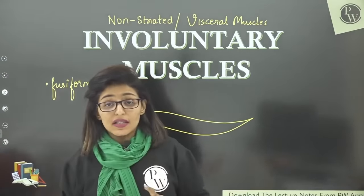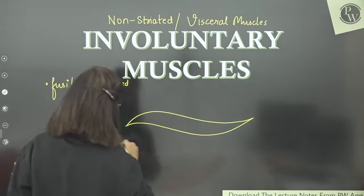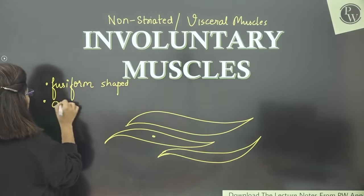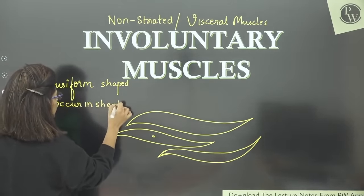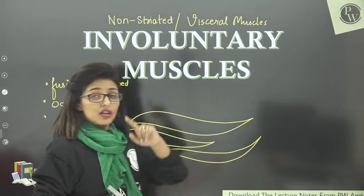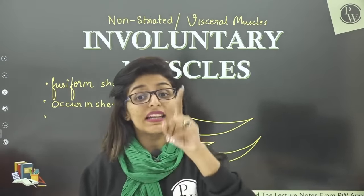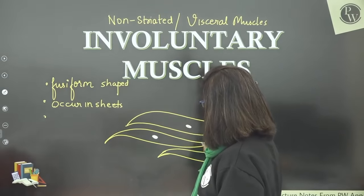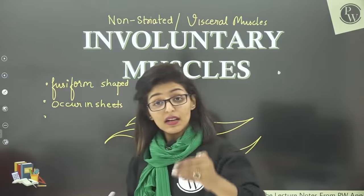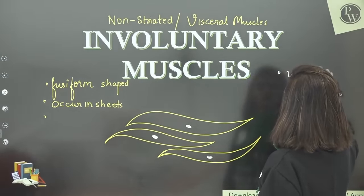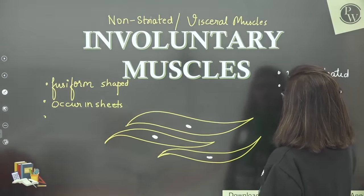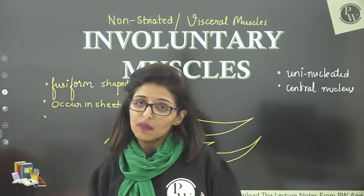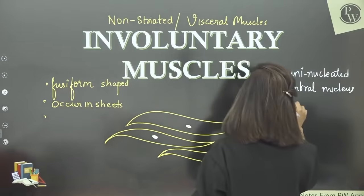Involuntary muscle fibers are different from voluntary muscle fibers. Voluntary muscle fibers were cylindrical, but these are spindle-shaped, also called fusiform — that's the NCERT term. Second, voluntary muscles occurred in bundles, but these form sheets. They occur in sheets. Third, voluntary muscle fibers were multi-nucleated, while involuntary muscle fibers are uni-nucleated — a single nucleus, located in the center. Also, like voluntary fibers, these are also unbranched.